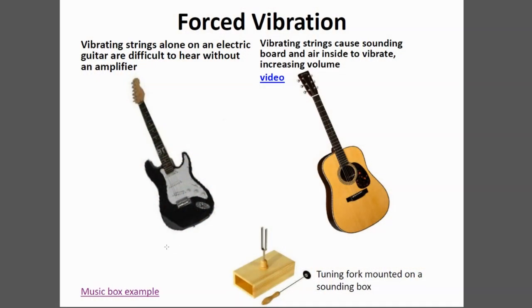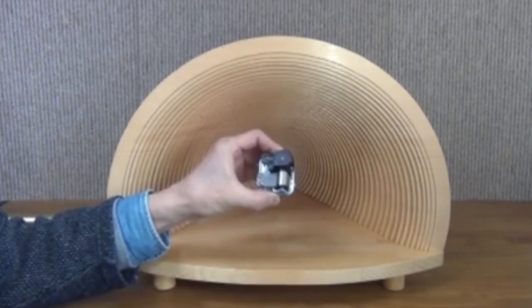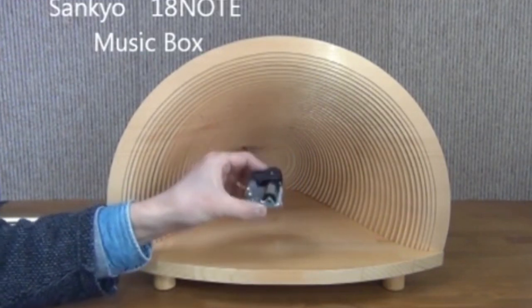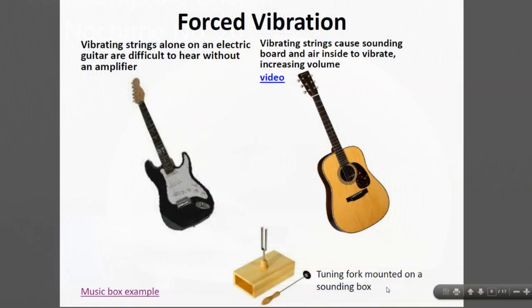If you've ever used a music box, this uses the same principle of vibrating more air to create a louder sound. And then lastly, let's take a look at the example of a tuning fork mounted on a sounding box. That's the purpose of this box, to create more vibration of air so we can hear more volume of sound.